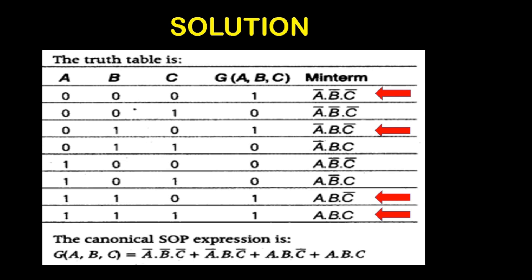Canonical means all the values are having all the literals — all the three input variables are present in each min term. Sum of product means we have to find the summation of all these min terms, so we add all four. The final answer is: A dash, B dash, C dash + A dash, B, C dash + A, B, C dash + A, B, C. This is the answer for this question.